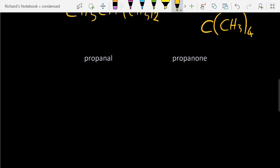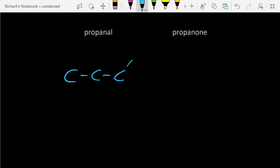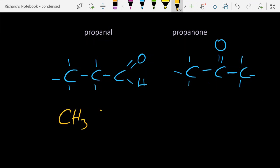Propanal versus propanone. Condensed structural formula: CH3, CH2, COH. Nope. OH implies an alcohol. This is an aldehyde. So once again, it's CHO.